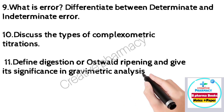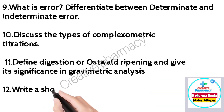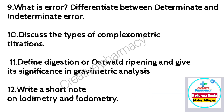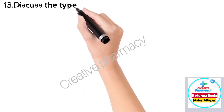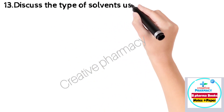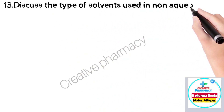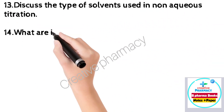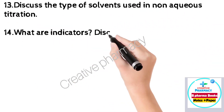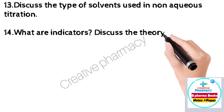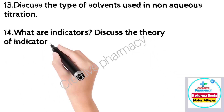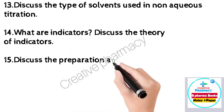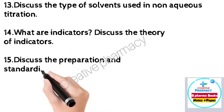Question 11: Write a short note on iodometry and iodimetry. Question 11: Discuss the types of solvents used in non-aqueous titration. Question 12: Discuss the theory of indicators.